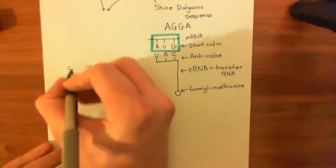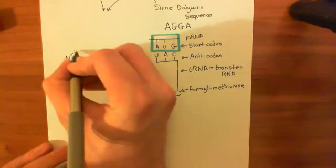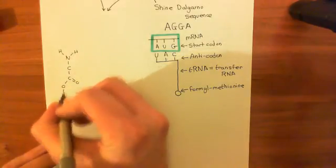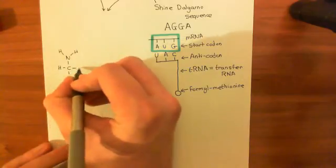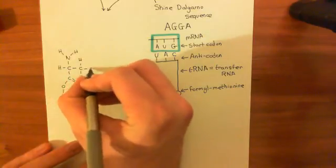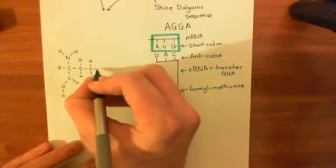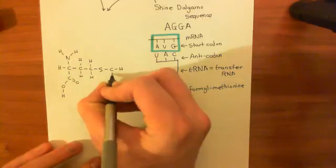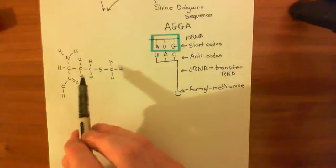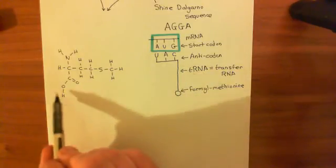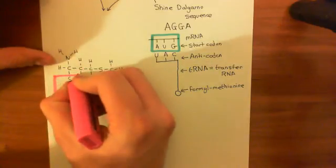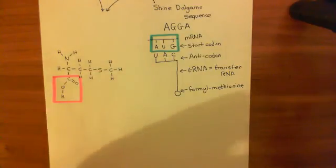Let's draw the basic amino acid structure: here's our amino group, here's the alpha carbon, here's the carboxylic acid group, a hydrogen coming off the alpha carbon, and also the R group of methionine — which is two methylene groups, then a sulfur atom, and then a methyl group off the end. That is the structure of methionine. The way you attach methionine to the tRNA is via this carboxylic acid group — that's how you attach this amino acid to the tRNA.